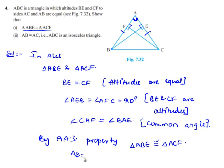That is, AB equals AC. And thereby, when two sides of a triangle are equal, it is an isosceles triangle. Therefore, ABC is an isosceles triangle.